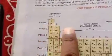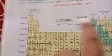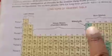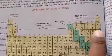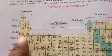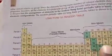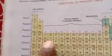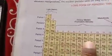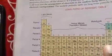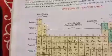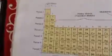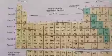In the first period, how many elements are there? Only two: hydrogen and helium. In the second period: lithium, beryllium, boron, carbon, nitrogen, oxygen, fluorine, neon. In the third period: sodium, magnesium, aluminum, silicon, phosphorus, sulfur, chlorine, argon. In the fourth period: potassium, calcium, titanium, chromium, iron, cobalt, nickel, copper, zinc, gallium, arsenic — different elements in each period.